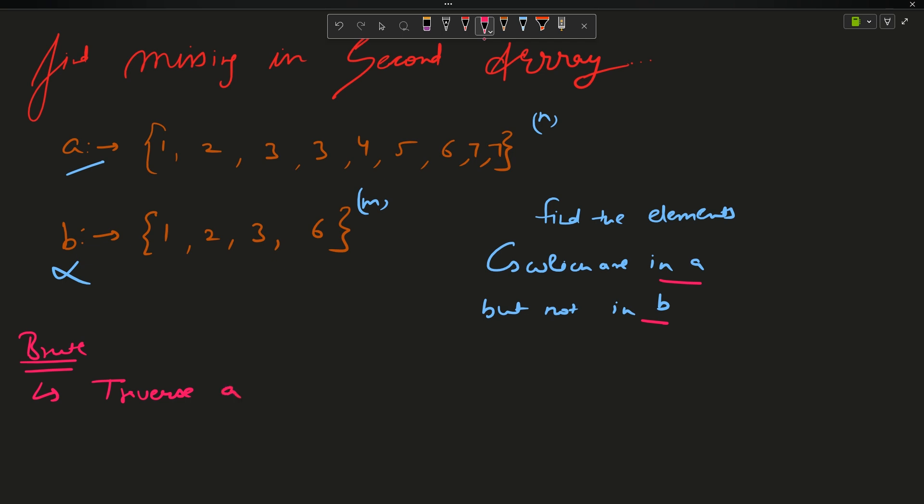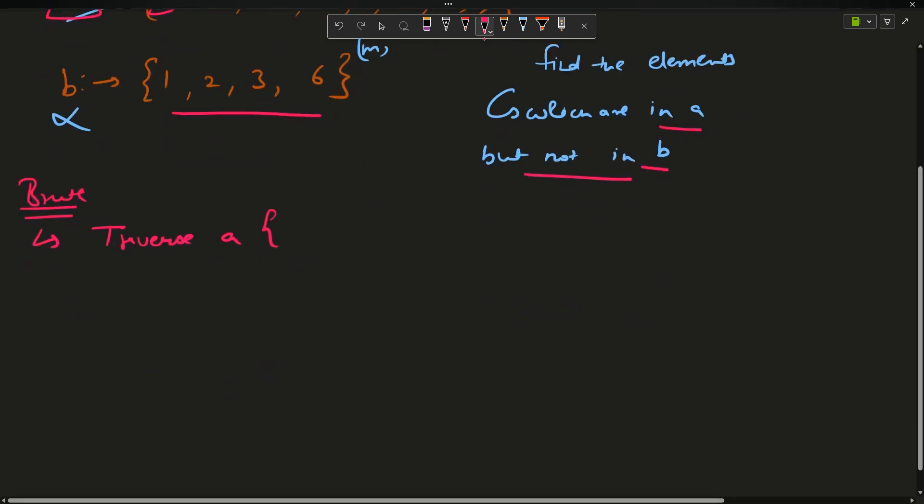If I go to 1, I definitely know that this is part of A. Now the second condition says it should not be a part of B, so I will check in B. I will say traverse A for each element in A.